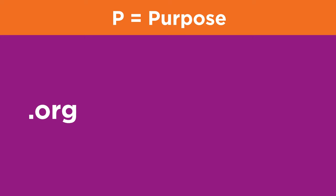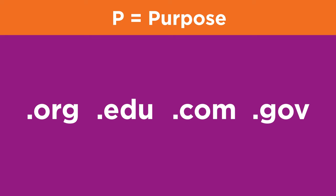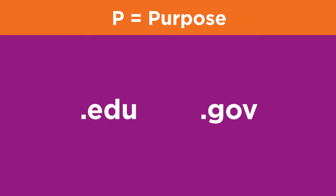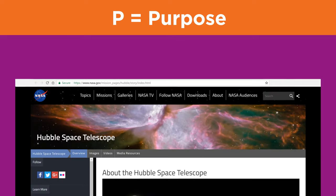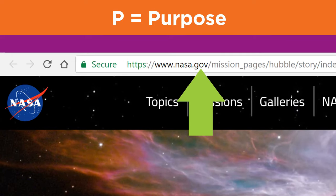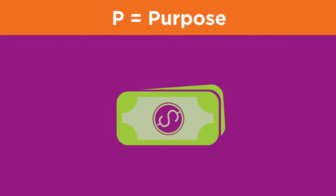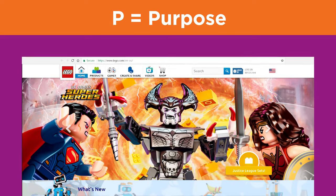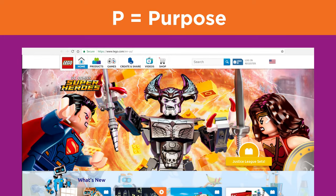Educational or government sites are more likely to provide trustworthy information. These sites usually end in .edu or .gov, like this example from NASA about the Hubble Space Telescope, which is a .gov site. Commercial sites are usually motivated to make money in some way, and they usually end with .com. These sites are often not as useful for research because their purpose is to sell their product, like this example from lego.com.